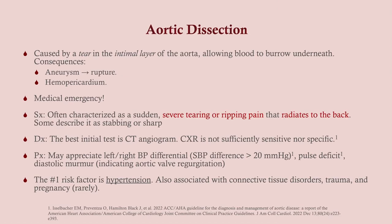Aortic dissection is a medical emergency. It's classically described as sharp, severe tearing or ripping pain that radiates to the back. Chest pain radiating to the back — you have to think aortic dissection. These patients go for CT angiogram, which is the best initial test. A chest X-ray is okay in an emergency with a portable film, but CT angiogram is much more sensitive and specific.